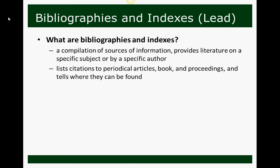For example, a bibliography on William Faulkner will point you toward many different sources on or about Faulkner. An index is a list of citations to periodical articles, books, and proceedings, and it also tells you where they can be found. So both provide citations for information on a specific subject — you might have a bibliography on William Faulkner or an index on neonatal care.